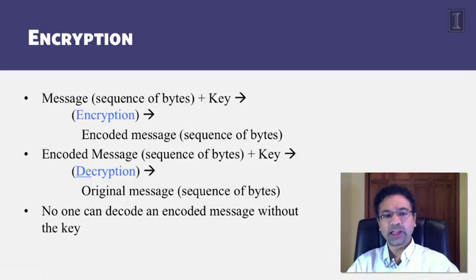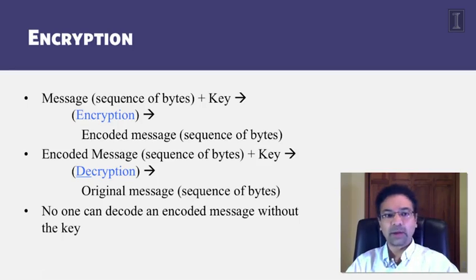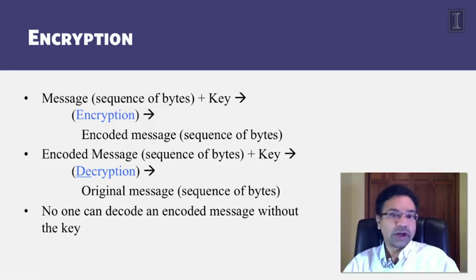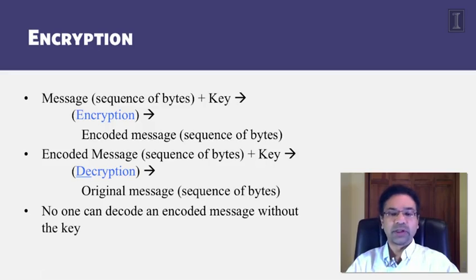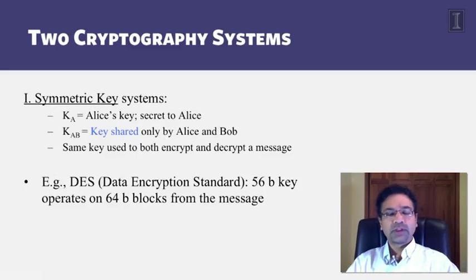No one can decode an encoded message without having access to the key. If two individuals have access to a given key, only those two individuals can send messages to each other that are encrypted and decrypted using that particular key. No other attacker — or even any non-attacking individual in the system — would be able to listen to messages being exchanged by that pair.